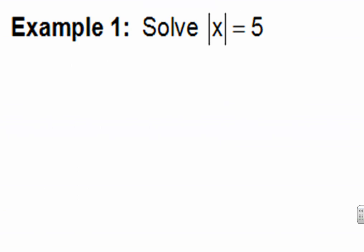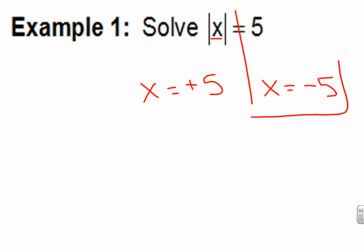Let's take a look at example one. First question: is everything inside the absolute value on the side of the X? Yes. So I'm going to write this twice — it looks so nice, I write it twice. The first time, I take what's inside the absolute value and set it equal to the positive answer. The second time, I set it equal to the negative answer. Since X is already by itself, I don't have to solve, and this is my final answer.